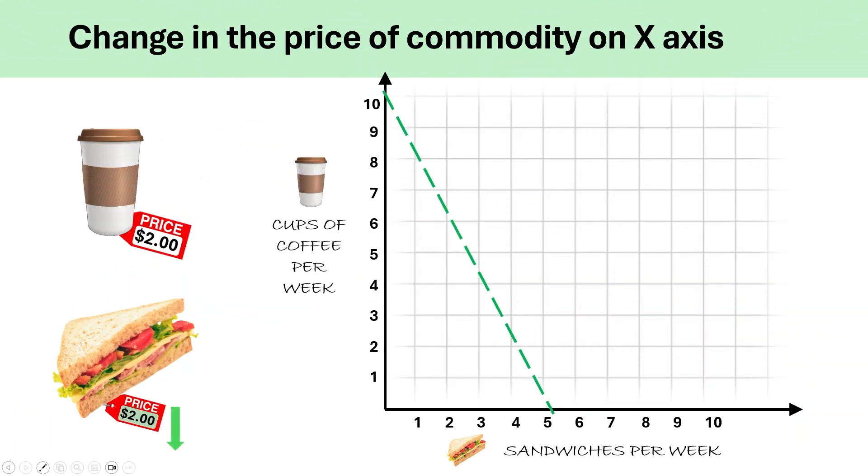Let's see what happens when the price of sandwiches falls from $4 to $2. Now, this way the consumer can afford more sandwiches for the same budget. This will cause the budget line to rotate outward to the right like this. This rotation reflects the increased purchasing power for sandwiches while keeping the consumer's income and the price of coffee unchanged.